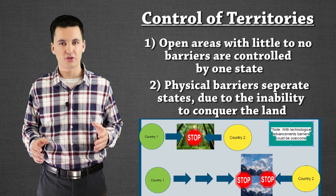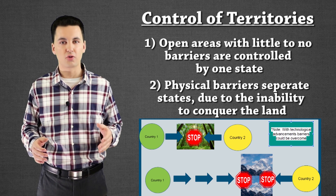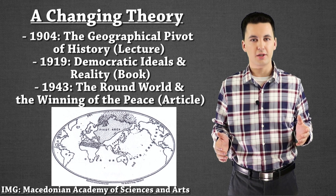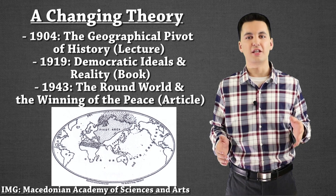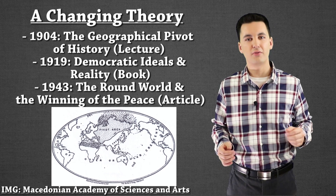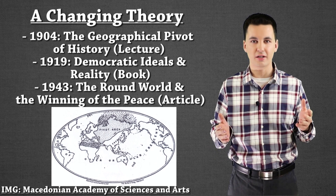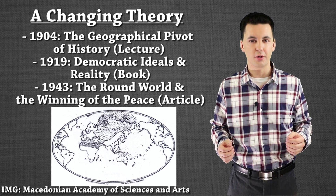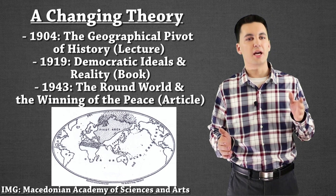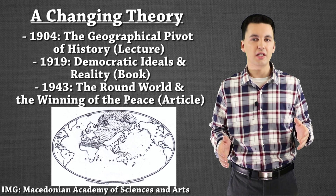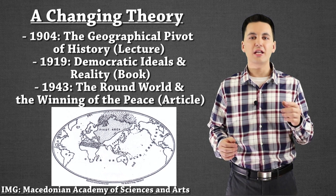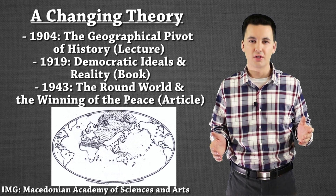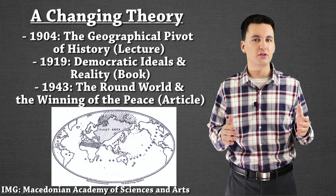Areas that were open were easy to take over and normally ruled by one party, while barriers like mountains split territory between two different states. This becomes really important for understanding the heartland theory, because natural barriers — or the lack of them — define a variety of parts of the theory. Mackinder continued to change his theory over time. Originally proposed in 1904 in a lecture called "The Geographic Pivot of History," he later published a book in 1919 called "The Democratic Ideals of Reality," and again revised his theory in a 1943 article, "The Round World and the Winning of Peace." In each version, he redefined the heartland area.